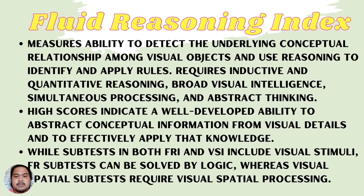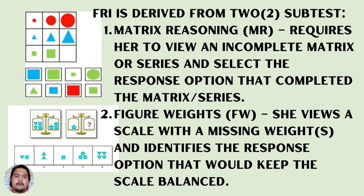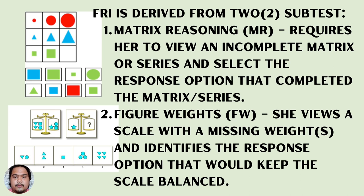High scores on the FRI indicate a well-developed ability to extract conceptual information from visual details. While both FRI and VSI subtests include visual stimuli, fluid reasoning can be solved by logic, whereas visual spatial subtests require visual spatial processing. The two FRI subtests are matrix reasoning, which requires selecting a response option to complete an incomplete matrix or series, and figure weights, which requires identifying response options that keep a scale balanced.